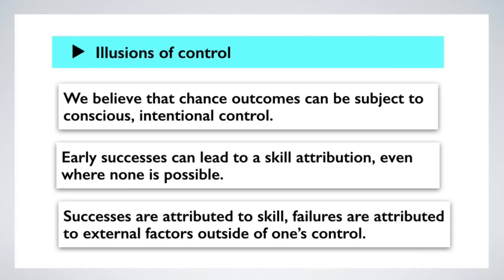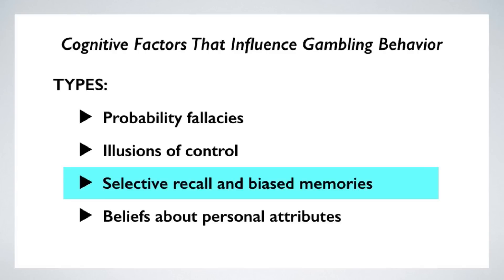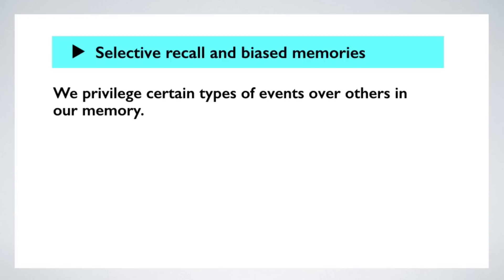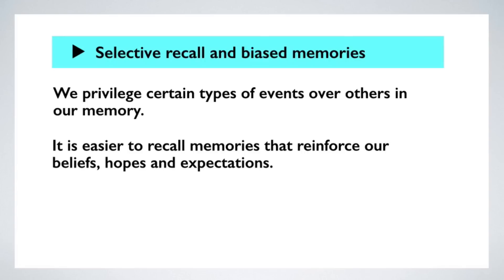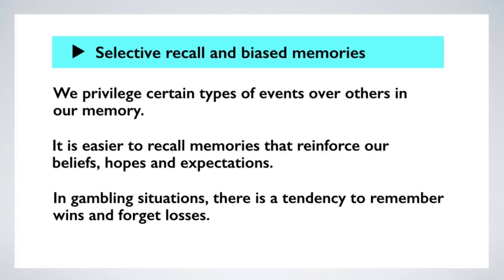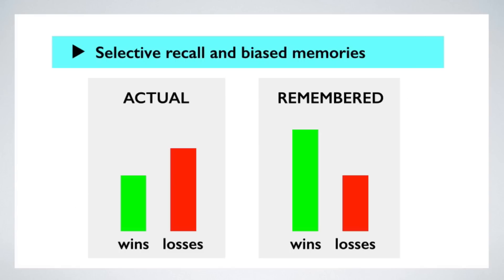You can see how casinos and gambling scenarios are a natural habitat for these illusions. Let's turn now to the third cognitive factor: selective recall and biased memories. This is a general phenomenon — we don't have equal access to all events in our memory. Some types of events get priority and we remember them more easily. In general, it's easier to recall memories that reinforce our beliefs, hopes, and expectations. This is particularly problematic in gambling situations because it can result in people remembering their wins and forgetting their losses. We end up with a skewed perception of our successes and failures — thinking we're doing better than we actually are — which can lead us to continue gambling long past the point where we should stop. A lot of gamblers are shocked to learn how much they spent after the fact because in their minds they believed they were doing better than that.